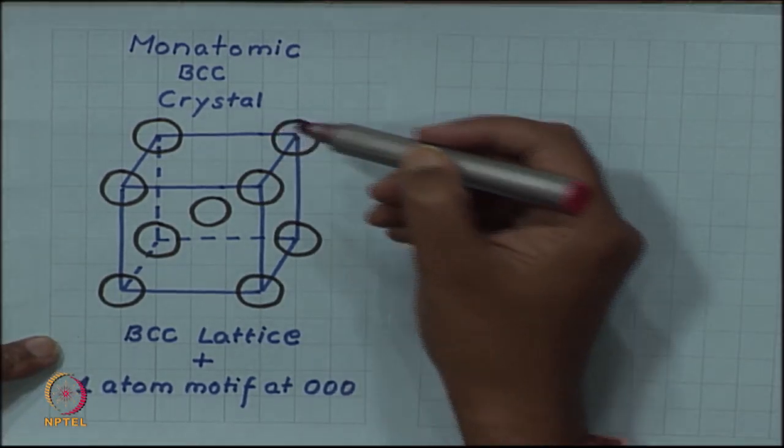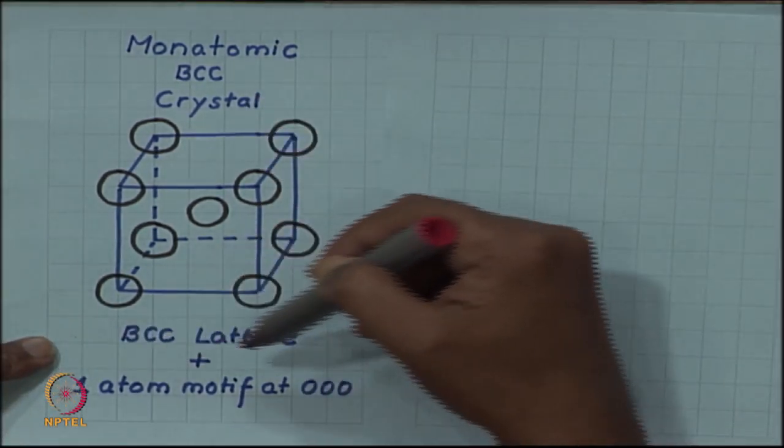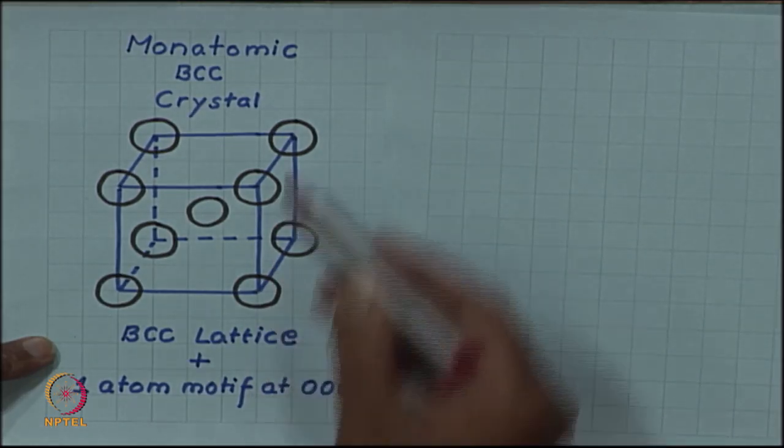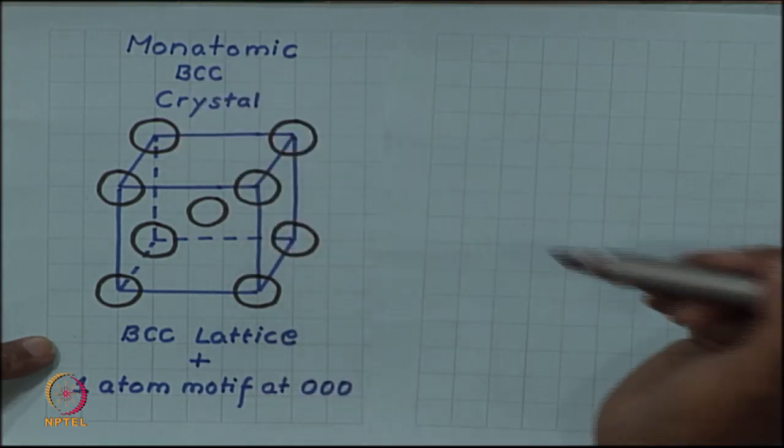Monatomic BCC crystal means a body-centered cubic lattice with one atom motif at each lattice point. That is the monatomic BCC crystal.